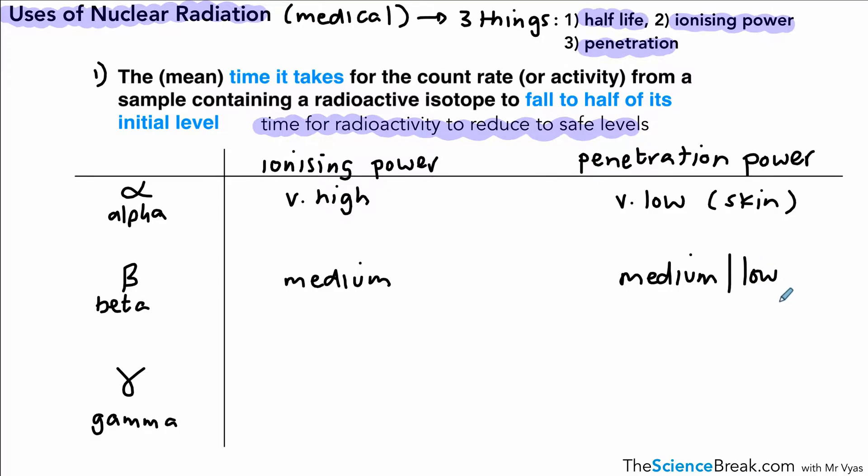Beta tends to be more in the middle level for penetration and ionizing power - it can be stopped by tin foil. Gamma has a very low ionizing power and a very high penetration power. It might be worth pausing here for a moment to remember this because it's going to be useful.